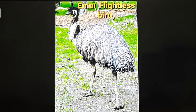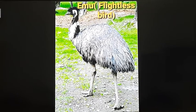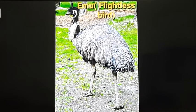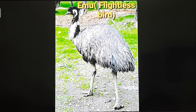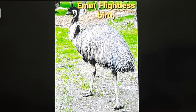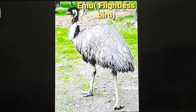Some birds are flightless birds, like the emu, kiwi, ostrich, and penguins. They cannot fly because their body is quite bulky and heavy, and their wings are not strong enough. That is why they are called flightless birds.